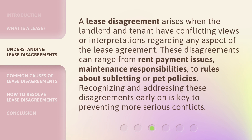A lease disagreement arises when the landlord and tenant have conflicting views or interpretations regarding any aspect of the lease agreement. These disagreements can range from rent payment issues and maintenance responsibilities to rules about subletting or pet policies. Recognizing and addressing these disagreements early on is key to preventing more serious conflicts.